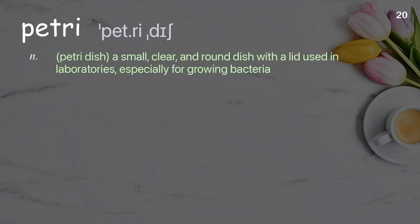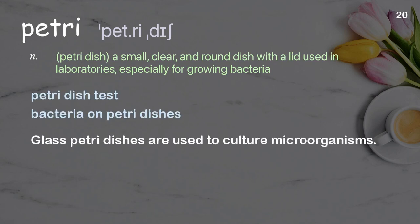Petri dish: A small, clear, and round dish with a lid used in laboratories, especially for growing bacteria. Examples: Petri dish test, Bacteria on petri dishes. Glass petri dishes are used to culture microorganisms.